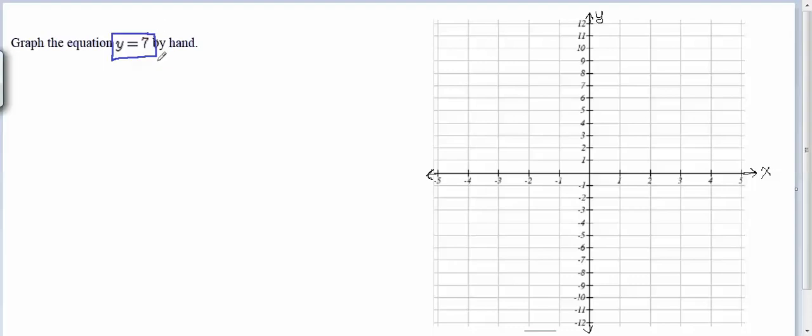So you might notice when you first look at the equation that it doesn't have all the pieces of some of the equations we've been used to looking at. It only has the variable y in it, and it just has a single number, 7. It's telling us y equals 7.